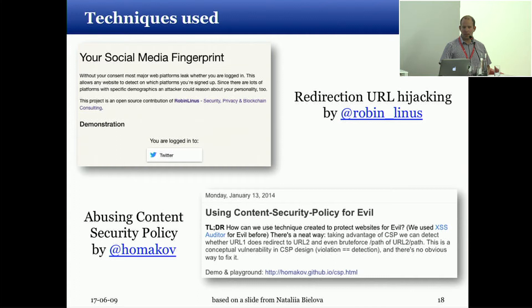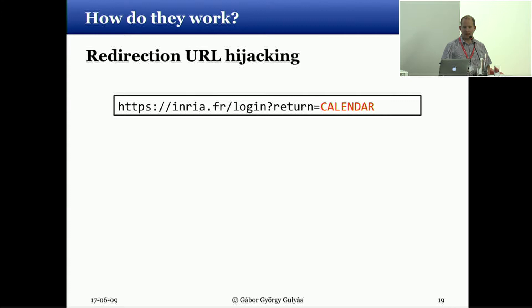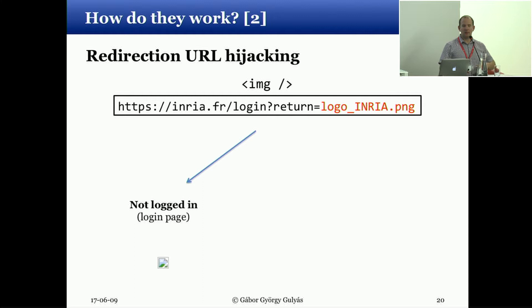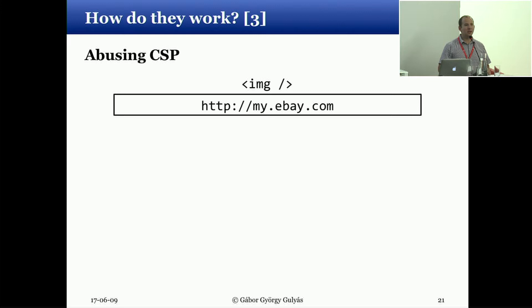The techniques we built upon were demonstrated before, and we developed this library to a larger extent to evaluate use for fingerprinting. Here is how it works: if you go to a site like INRIA and try to open the calendar, if you are not logged in you get redirected to a login page. That login page indicates you should be returned to the calendar after logging in. If this return URL is not checked, we can embed it as an image in a third-party website where the user doesn't see it — if the image loads we know the user is logged in; if a login page loads instead, we know they are not.